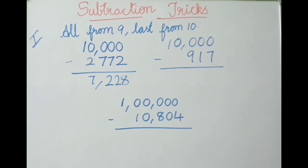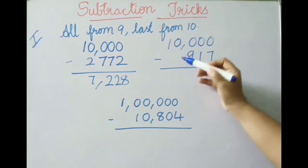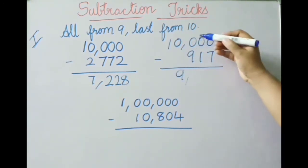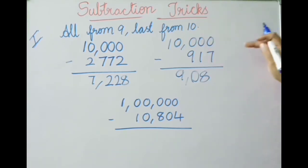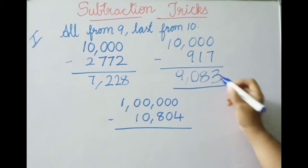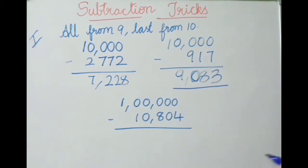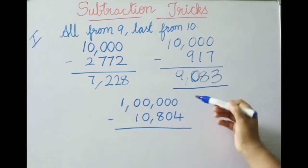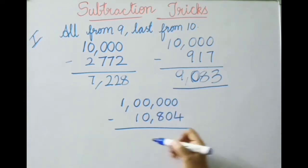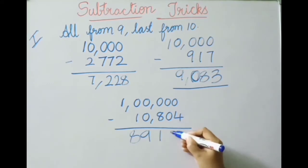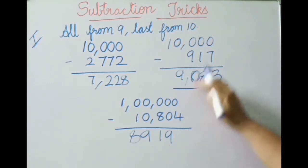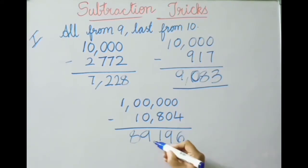See the next example: ten thousand minus nine hundred seventeen. All from nine — here no number is present, so nine minus zero is nine; nine minus nine is zero; nine minus one is eight; last number from ten: ten minus seven is three. So the answer is nine thousand eighty-three. The last example in this method: one lakh minus ten thousand eight hundred forty-four. All numbers from nine, last from ten: nine minus one is eight, nine minus zero is nine, nine minus eight is one, nine minus zero is nine, nine — last number from ten: ten minus four is six. The answer is eighty-nine thousand one hundred ninety-six.